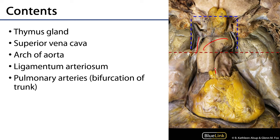Moving toward the superior mediastinum we can see the pulmonary trunk, which bifurcates into the left and right pulmonary arteries. In association with the left pulmonary artery, we can see the ligamentum arteriosum, which is a remnant of the ductus arteriosus. In utero, this structure conducted blood from the origin of the left pulmonary artery to the arch of the aorta, bypassing pulmonary circulation. Here it is just a fibrous ligament.